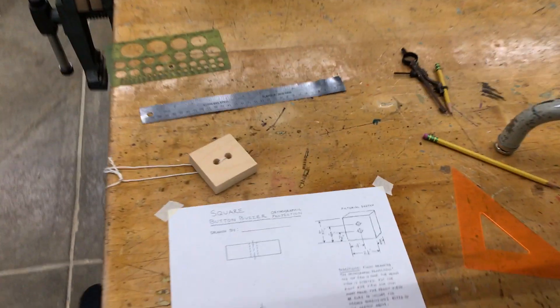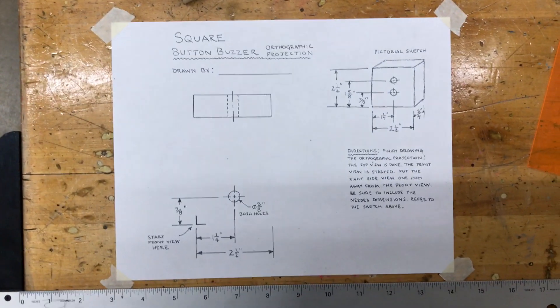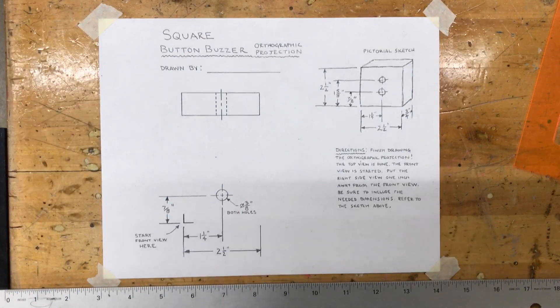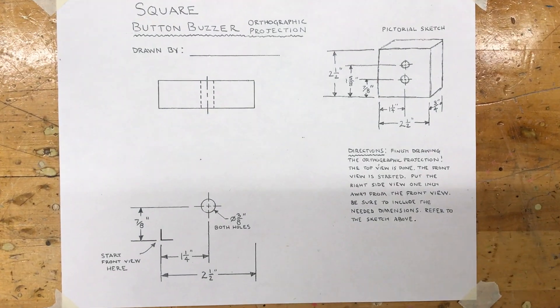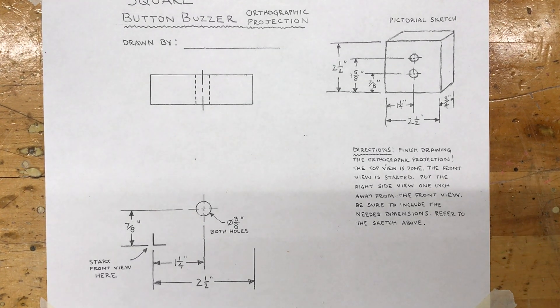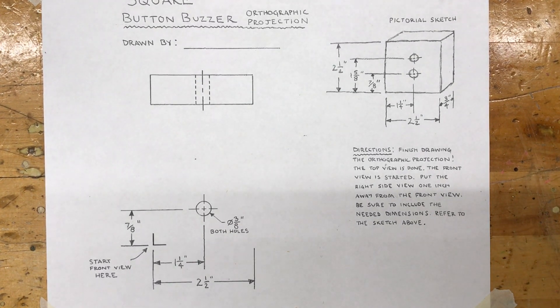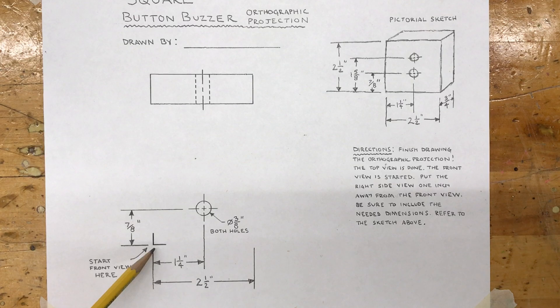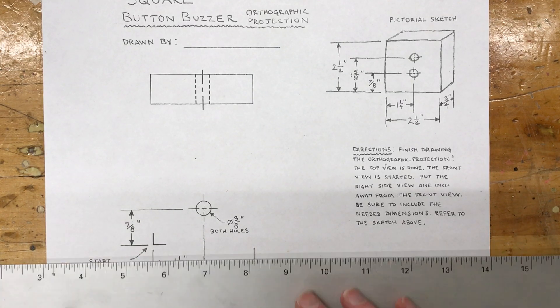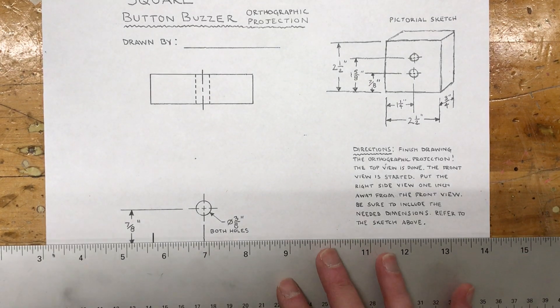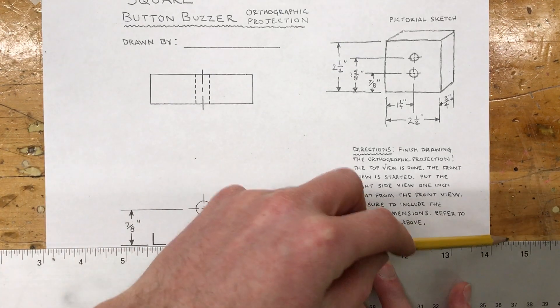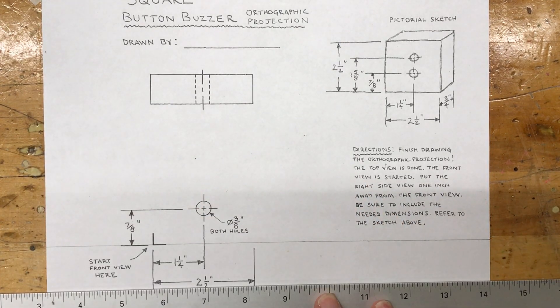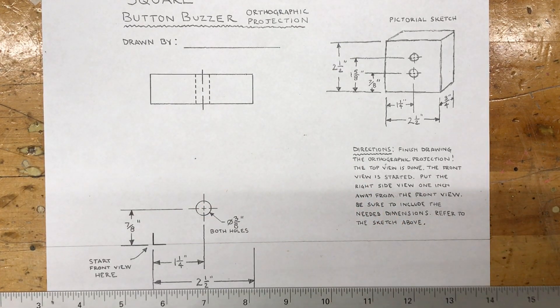This is how to do the square button buzzer drawing. I have my paper taped level with the T-square. My starting point is right here, so the first thing I'm going to do is draw a light line across the page here. I'm making it probably a little darker than I should but I want you to be able to see it.